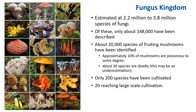Roughly there are 2.2 million to 3.8 million species of fungi, and about 148,000 species have been described. Roughly 22,000 species are basidiomycetes. Of this, 10,000 species produce basidiocarps of sufficient size and suitable texture to be considered as a possible food source. About 50% of those species are considered to possess varying degrees of edibility. Approximately 10% of mushrooms are poisonous to some degree and about 30 species are deadly. Only 200 species have been cultivated, and 20 of these are commercialized.